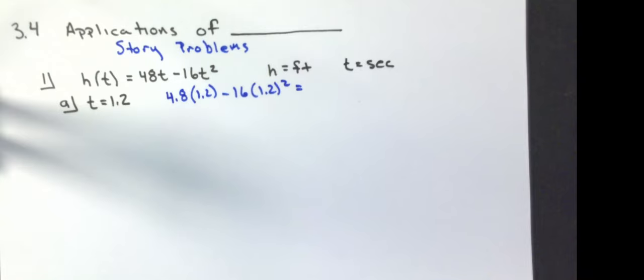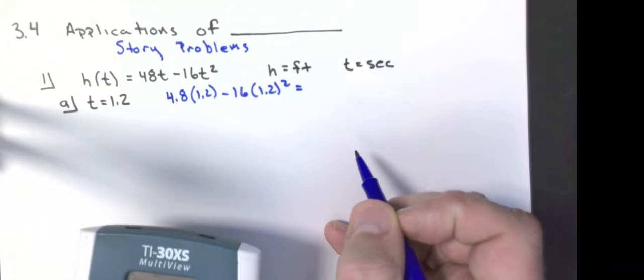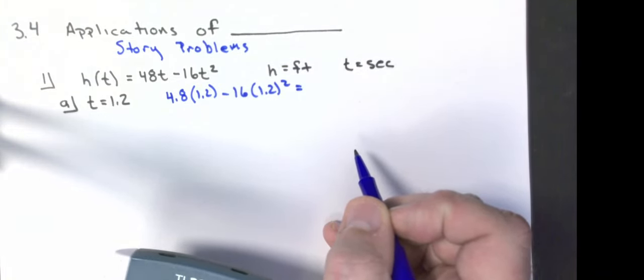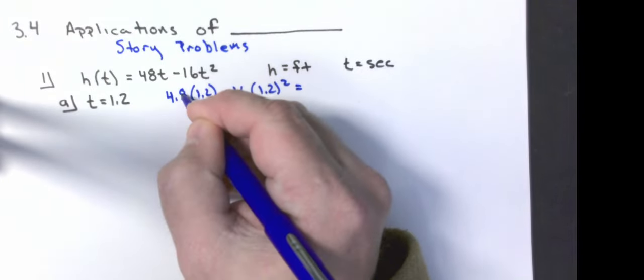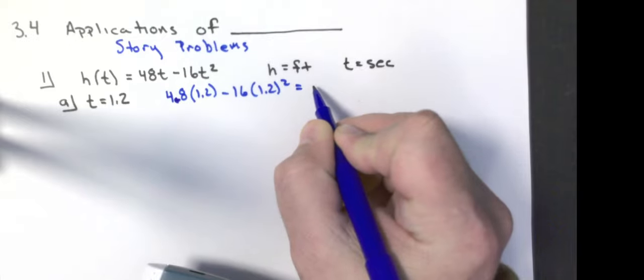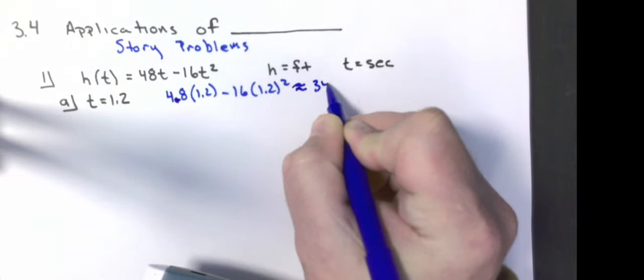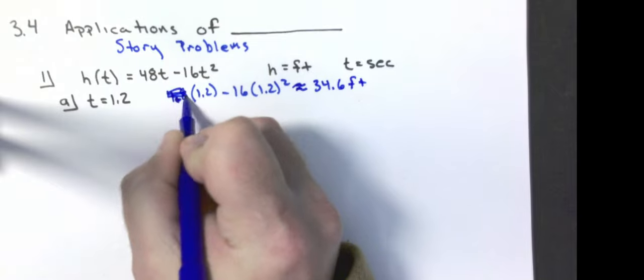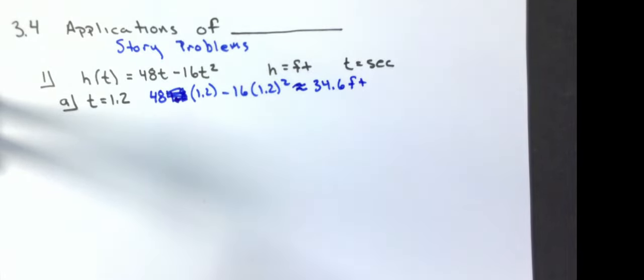So it would be 48 times 1.2 minus 16 times 1.2 squared. This is a calculator question. It says to round it to the nearest tenth of a foot. So make sure that you follow the directions. And please make sure to use units. I'm going to do 48 times 1.2 minus 16 times 1.2 squared. Actually, it's not 4.8. It's 48. I knew something looked wrong with my answer. 34.56, which is approximately 34.6 feet.